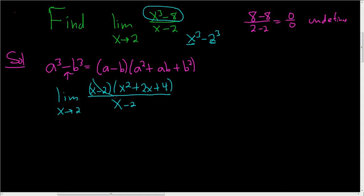And so you see now that these guys cancel, and so we end up with the limit as x approaches 2 of the quantity x squared plus 2x plus 4.